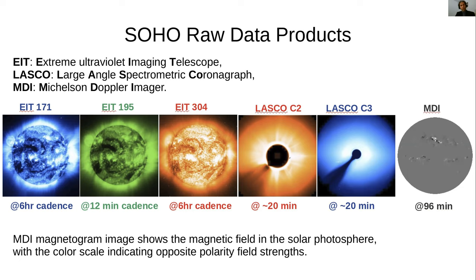Each of these products comes at a different cadence. For instance, the coronagraphs come at a cadence of around every 20 minutes. Whereas EIT 195 comes at a slightly higher cadence of around five times an hour, and the EIT 171 and 304 come at around only once every six hours.